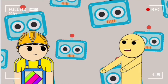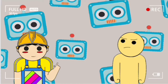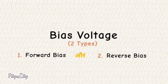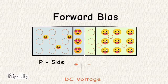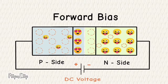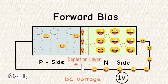Itna sab kuch us chhoti si cheez ke andar chalta rehta hai. Lekin itna sab karne ka ek hi karan hai — ki electronic circuit mein jo current ka flow hai, usko ek hi direction mein flow karvana. Aur woh kaise hoga? Iske liye DC voltage ka use kiya jata hai jisko electronics mein bias voltage bhi kaha jata hai. Is bias voltage ko do tariqe se istemaal kiya ja sakta hai: ek hai forward bias aur doosra hai reverse bias. Forward bias mein diode ke p-side ke saath DC voltage ki positive terminal ko aur n-side ke saath negative terminal ko joda jata hai, jis se depletion layer dheere dheere khatam rehti hai aur diode ke andar electricity flow karta hai.